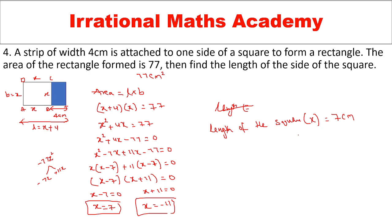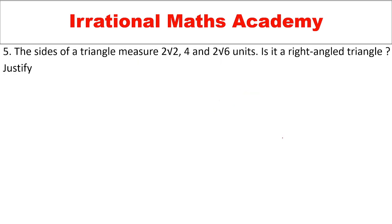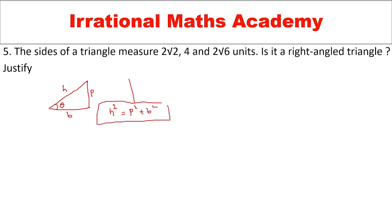A triangle has sides measuring 2√2, 4, and 2√6 units. Is it a right-angle triangle? We know that for a right-angle triangle, if hypotenuse² = sum of squares of the other two sides, i.e., h² = p² + b², and if this condition is satisfied, it is a right-angle triangle; if not, it is not.